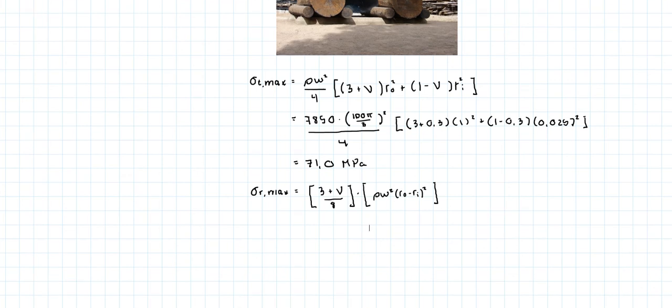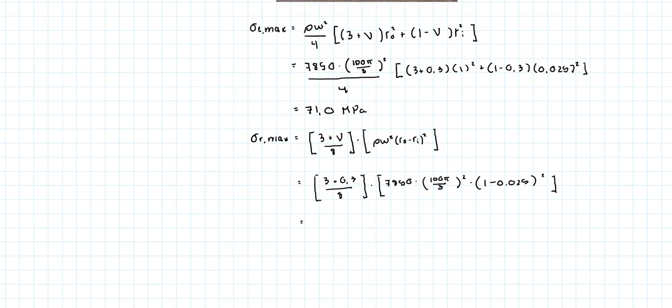So the maximum radial stress is 3 plus 0.3 divided by 8 times 7,850 times 100π over 3 squared times 1 meter minus 2.5 centimeters squared. And then what we will find is 33.8 megapascals. So clearly the controlling factor is the tangential stress.